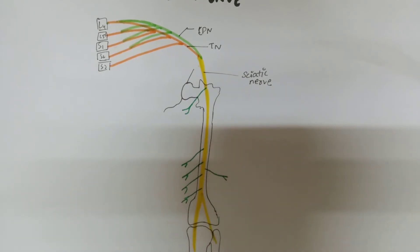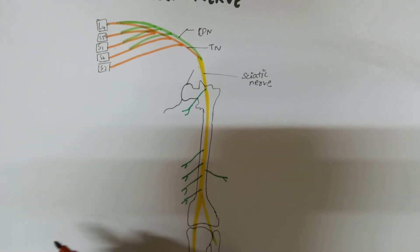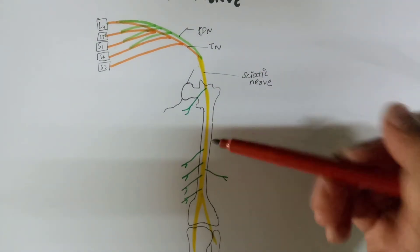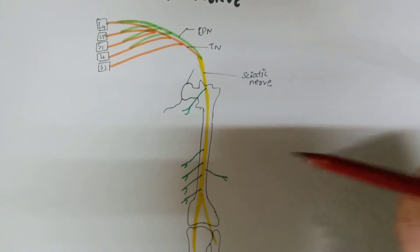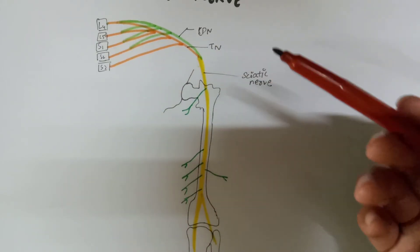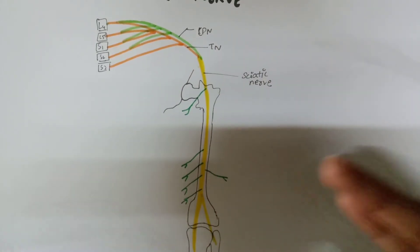On the medial side, it comes from the tibial nerve, the tibial part of the sciatic nerve. And on the lateral side, there is only one branch which comes from the common peroneal part of the sciatic nerve.